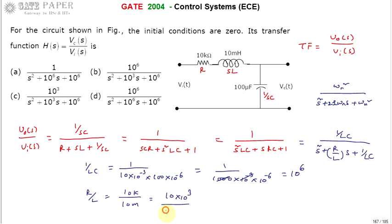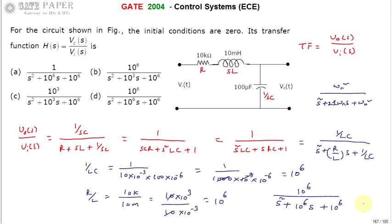R/L equals 10 kΩ divided by 10 millihenry = (10×10³)/(10×10⁻³). The 10s cancel and 10³/10⁻³ = 10⁶, so R/L = 10⁶. Therefore the required transfer function is 10⁶ divided by (s² + 10⁶·s + 10⁶). The right answer for this question is option D.